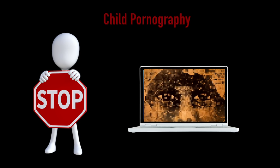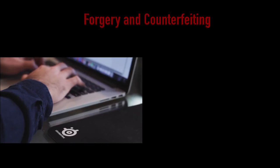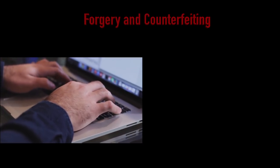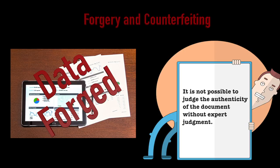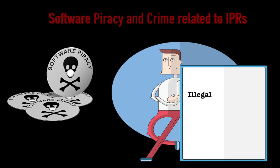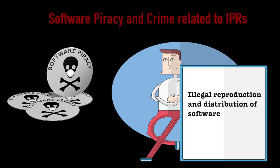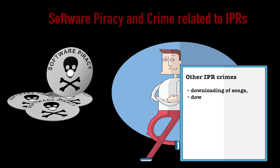Child pornography is an act of possessing images or videos of a minor under 18 engaged in sexual conduct. Forgery and counterfeiting involves using computers to forge documents — with advances in hardware and software, it is possible to produce counterfeits so close to originals that expert judgment is required to judge authenticity. Software piracy is the illegal reproduction and distribution of software for personal use or business, falling under IPR infringement. Other crimes under IPR infringement include downloading of songs and movies.